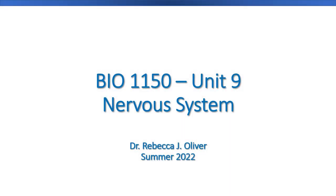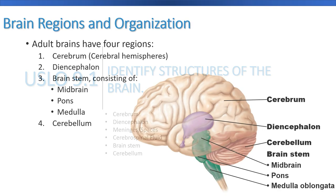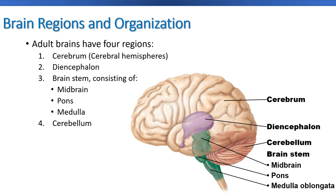Hey everybody, Dr. O here and welcome to Unit 9, the unit on the nervous system. We're going to start by talking about the brain, and in the adult brain we're going to have four distinct regions.